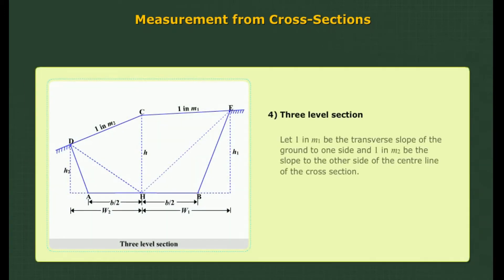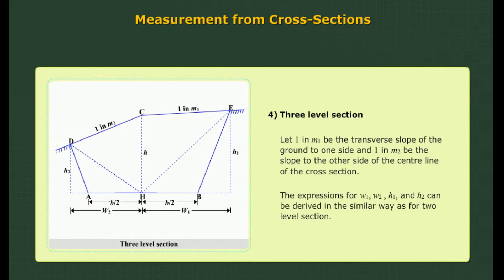Three-level section: Let 1 in M1 be the transverse slope of the ground to one side and 1 in M2 be the slope to the other side of the centre line of the cross section. The expressions for W1, W2, H1 and H2 can be derived in a similar way as for the two-level section.